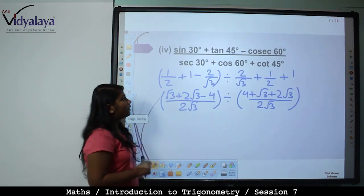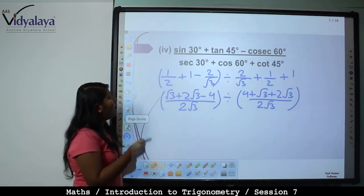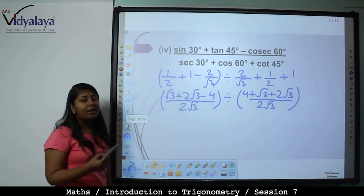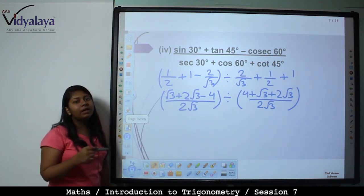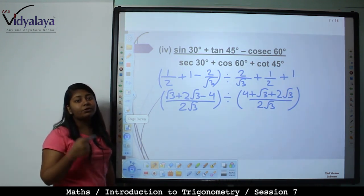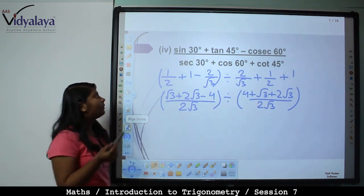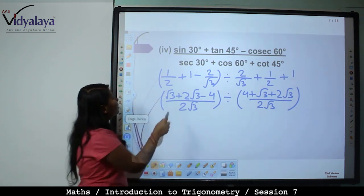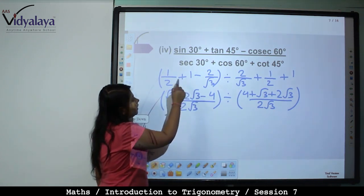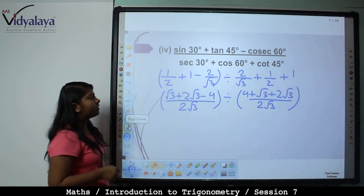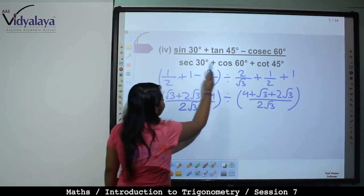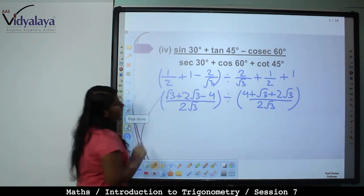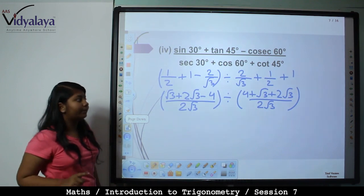Next: (sin 30 plus tan 45 minus cosec 60) upon (sec 30 plus cos 60 plus cot 45). Now assuming you know all the values and which trigonometric ratio is the reciprocal of which, I will directly explain the calculation. Sin 30 is 1 by 2, plus 1 (tan 45), minus cosec 60 is 2 by root 3. Brackets are very important.